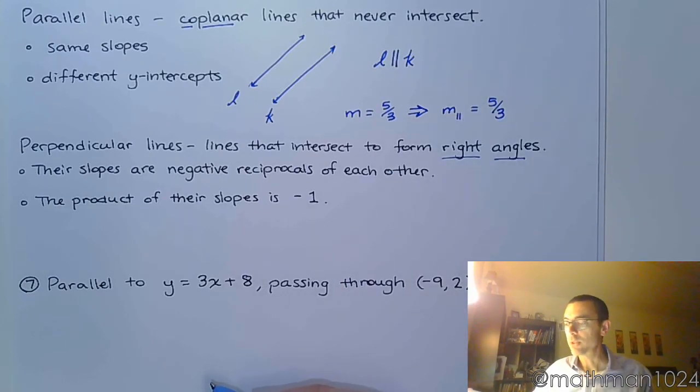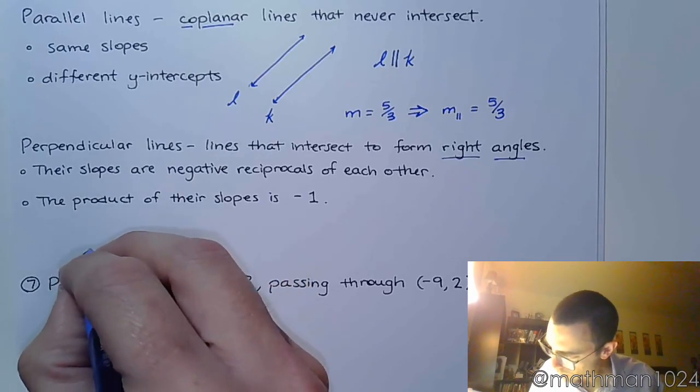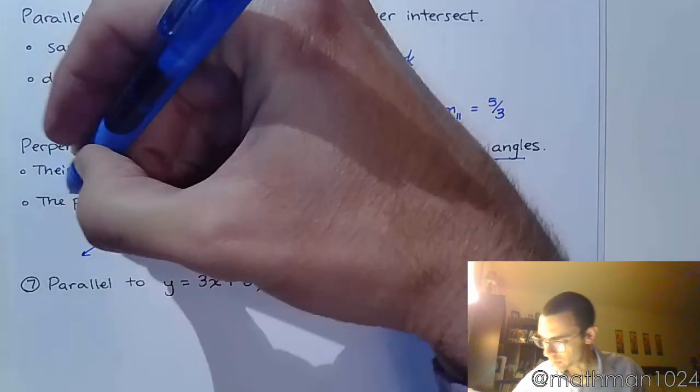The thing we know about their slopes is that they are negative reciprocals of each other. Another way of saying that is that the product of their slopes is negative 1. So lines that are perpendicular will look like this.